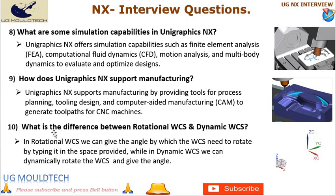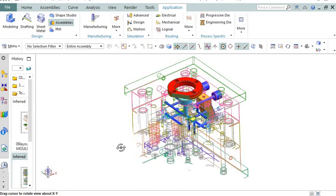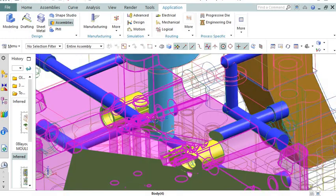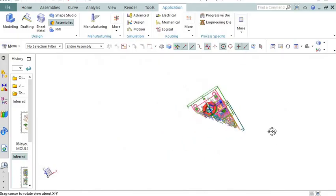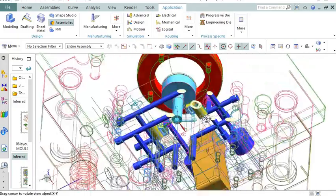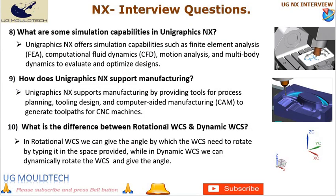Next point in UG NX interview is number 10. What is the difference between rotational WCS and dynamic WCS? In rotational WCS, we can give the angle by which the WCS needs to rotate by typing it in the space provided, while in dynamic WCS we can dynamically rotate the WCS and give the angle. The main difference is that rotational WCS is defined by a fixed axis, while dynamic WCS is defined by the position and orientation of a selected object.